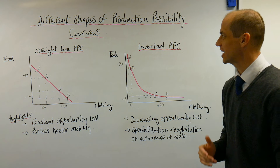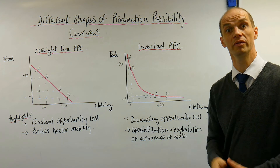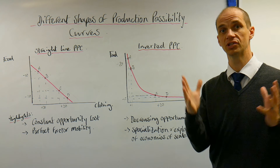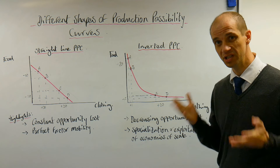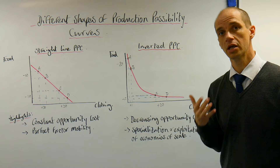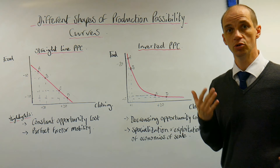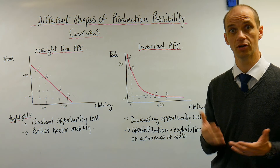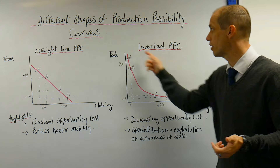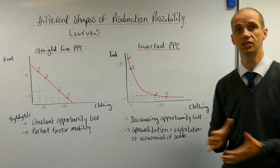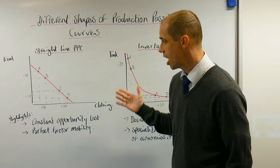Let's take a look at different shapes of the production possibility curves. So far we've only considered the one that bows out with increasing opportunity cost, but it's important to understand that PPCs can be seen in different shapes. For instance, the straight line PPC you'll see again in international economics in Year 13 when it comes to comparative advantage. We can also see the inverted PPC as well.